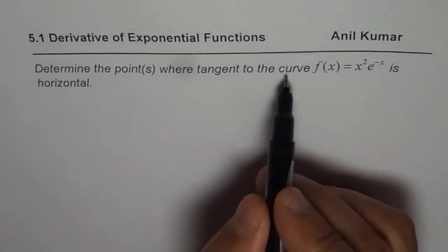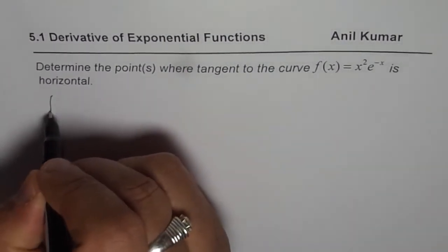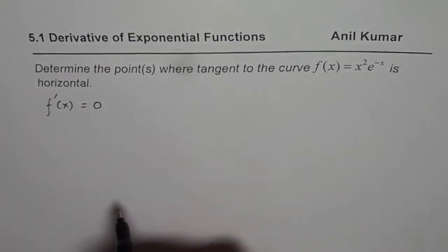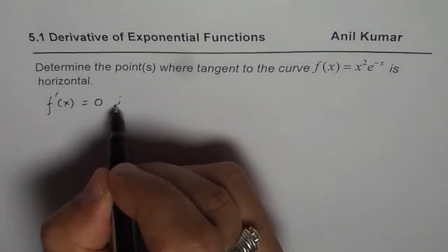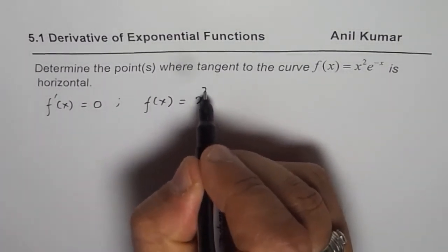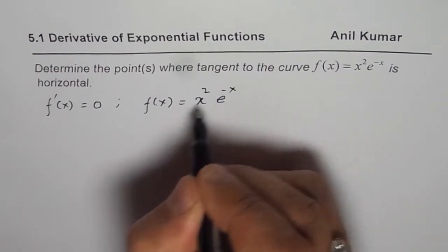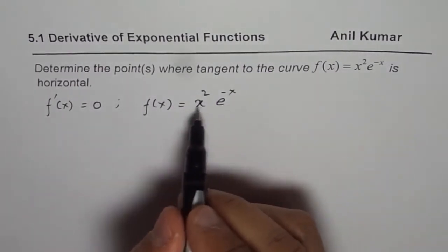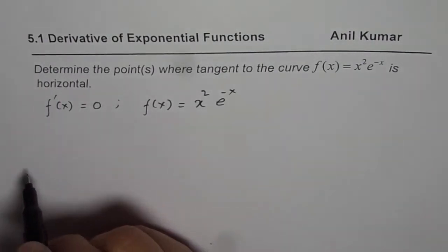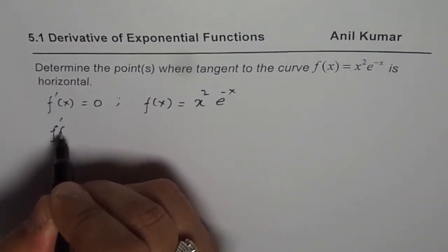When we say tangent to the curve is horizontal, that means the derivative is equal to 0. So those are the points which we need to find. What we are given here is a function f of x equals x squared e to the power of minus x. So we can apply the product rule, find the derivative, equate it to 0 and then find the points. Let's find the derivative of this function.